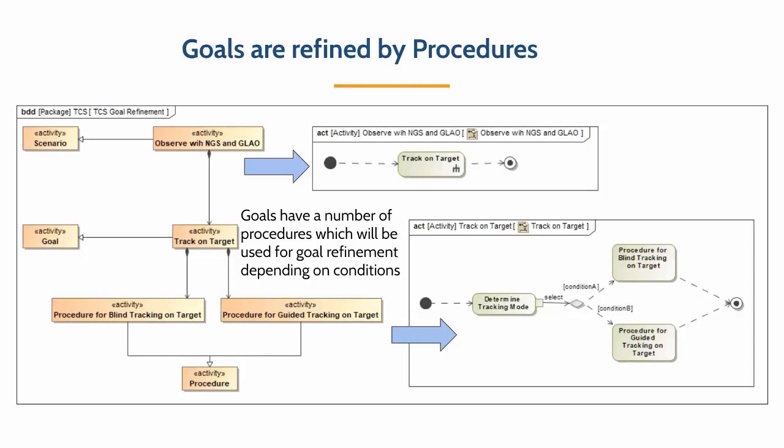Goals are refined by so-called procedures. Procedures are behaviors selected depending on some conditions. For example, if a certain accuracy is required for tracking on target, you can either choose blind tracking or guided tracking on target, but the goal itself doesn't change — only the specification of the goal changes for the planner. We still want to track, but sometimes with different accuracies or different specifications. The how is left entirely to the control system.